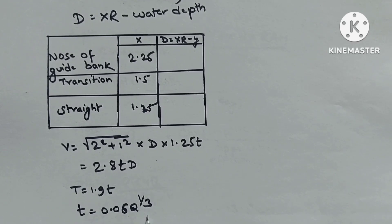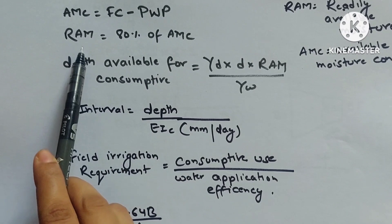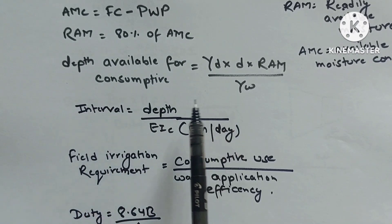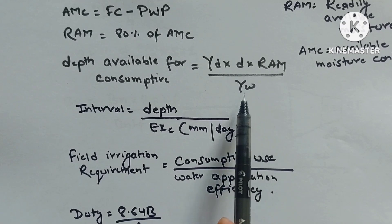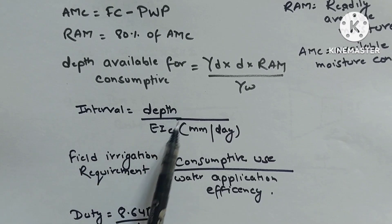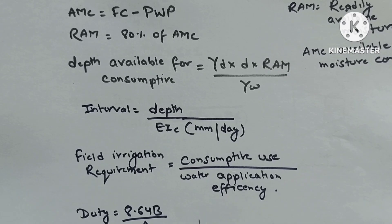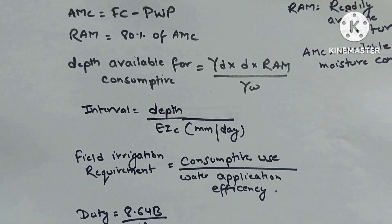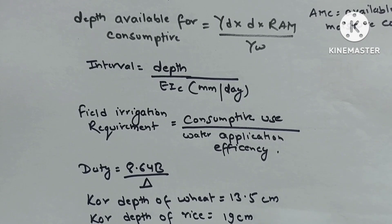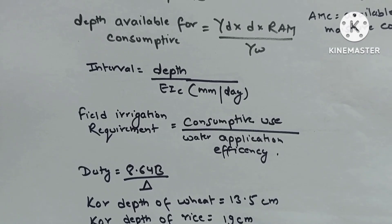Available moisture content = field capacity − permanent wilting point. Readily available moisture = 80% of available moisture content. Depth available for consumptive use = γd × D × readily available moisture / γw. Interval = depth/(ETc mm per day). Field irrigation requirement = consumptive use / water application efficiency. Duty = 8.64B/delta. Root depth of wheat = 13.5 cm, rice = 19 cm.